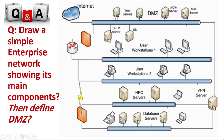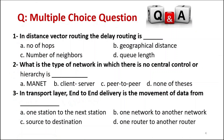Multiple choice questions. In distance vector routing, RIP uses number of hops as its metric. Next: what type of network has no central control or hierarchy? The answer is C — peer-to-peer, because in a peer-to-peer network, each node acts as both client and server, with no difference in responsibilities between nodes. This is why there is no central control or hierarchy in peer-to-peer networks.